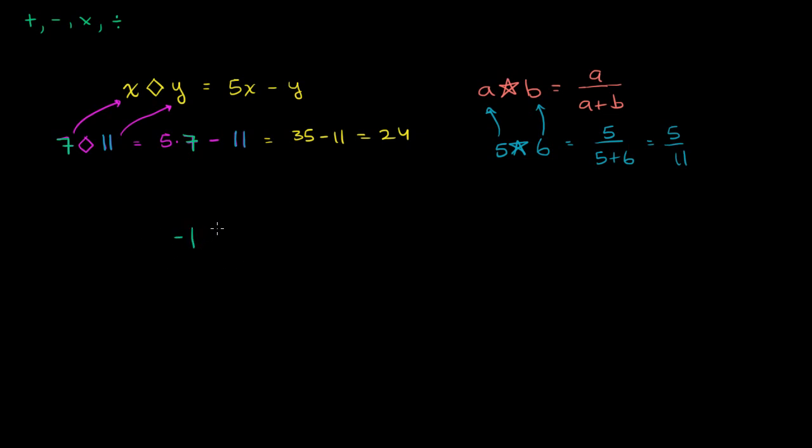But you could do something like, something interesting, like negative 1 diamond 0 star 5. And once again, we just focus on parentheses, because that's the only thing that's telling us what to start on first.